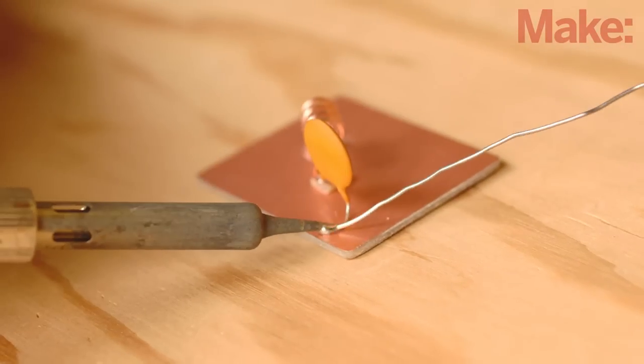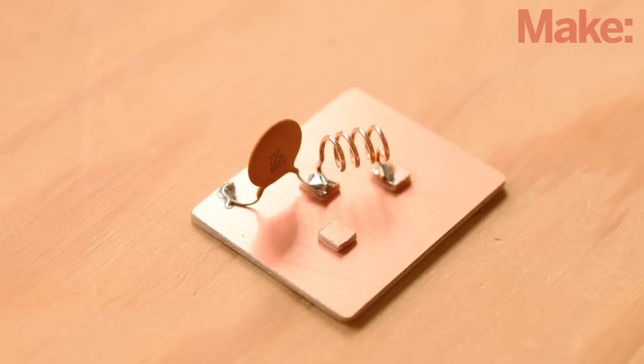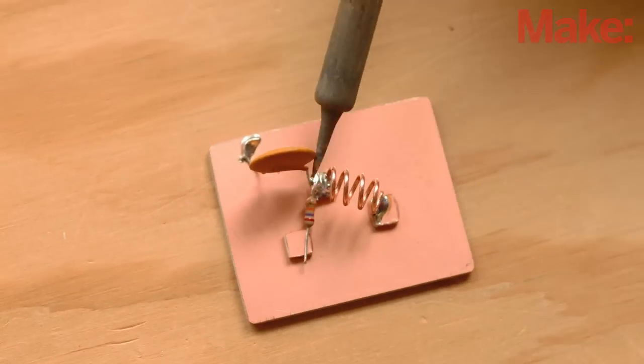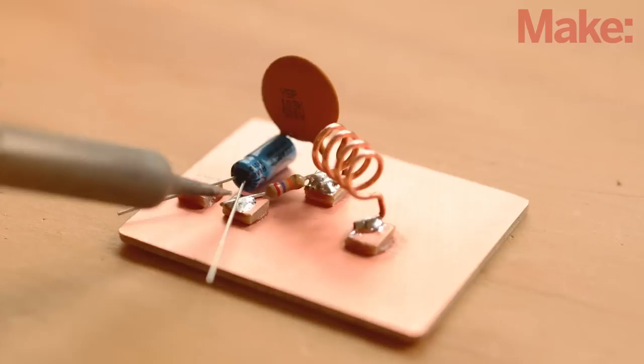Begin with a 0.01 microfarad capacitor, then another pad, the 27 kilo ohm resistor, the fourth pad, the electrolytic capacitor.